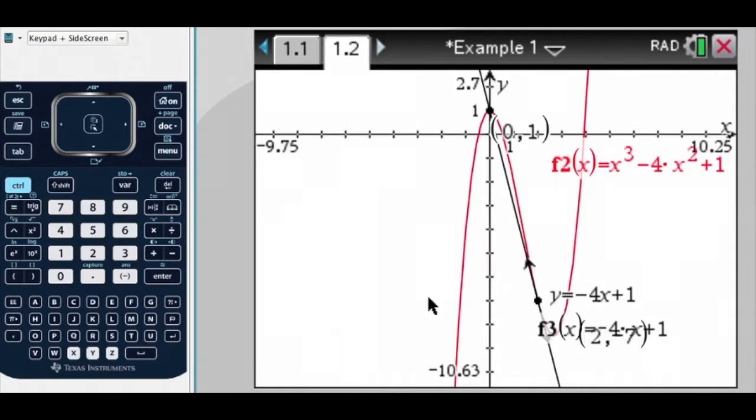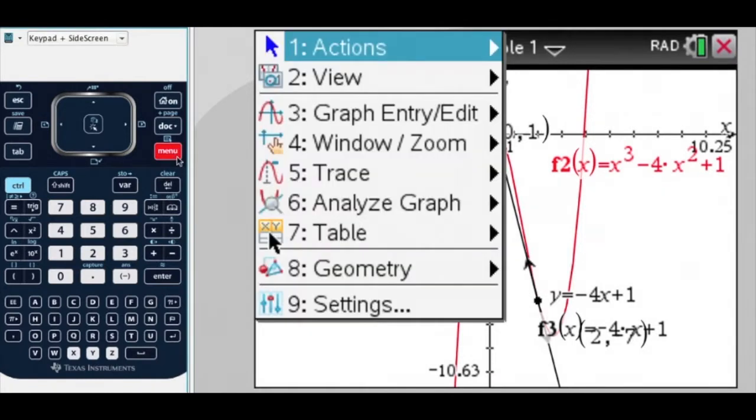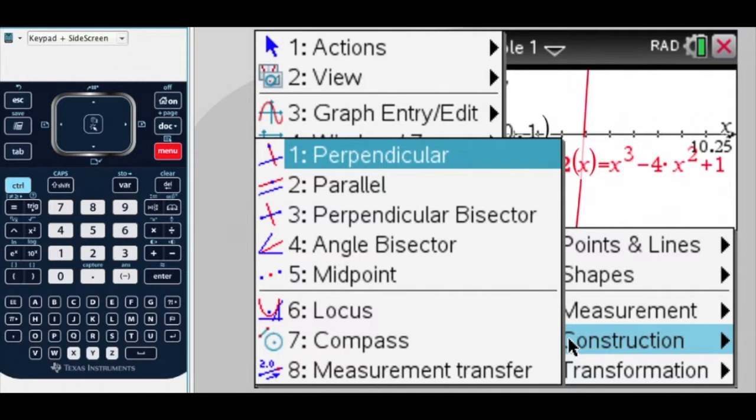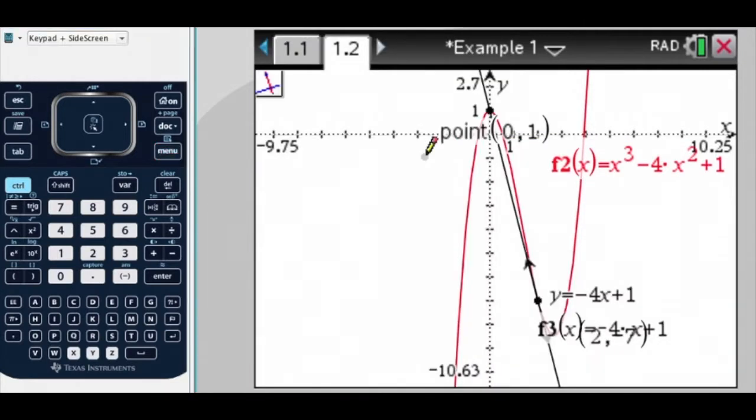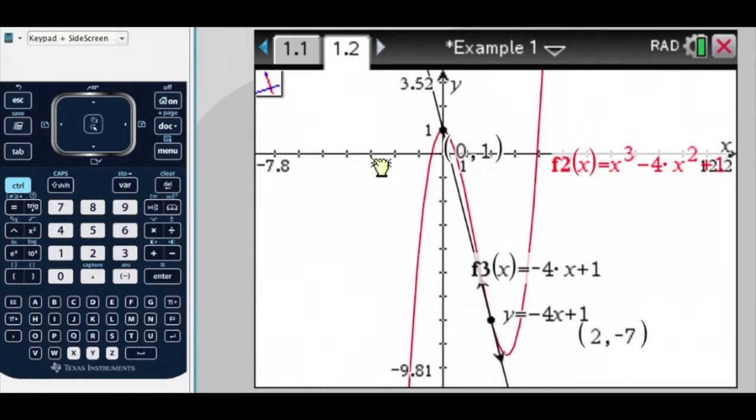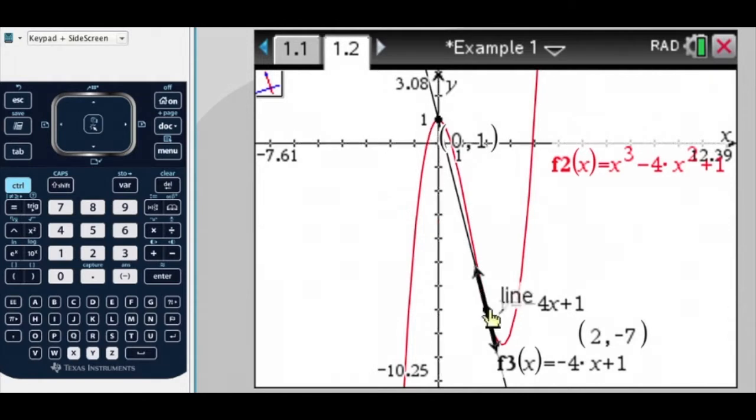So I've got there, it's not in press to test mode, so you can't do this in press to test mode. So now, press Menu, Geometry, and this time we're going to choose Construction, and we're going to construct a perpendicular line. So perpendicular line, now at this point here, to this line, so there it is there.